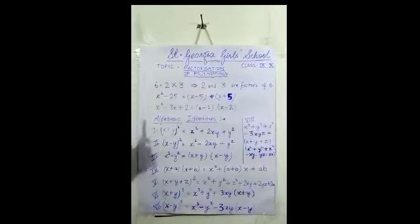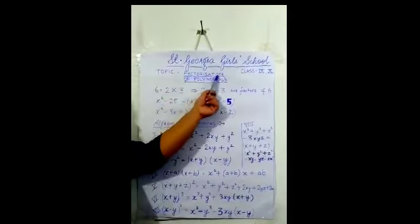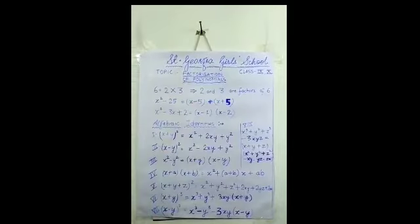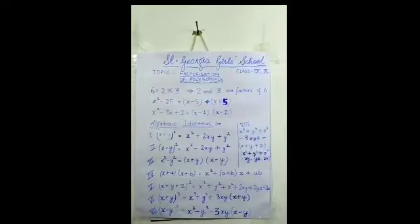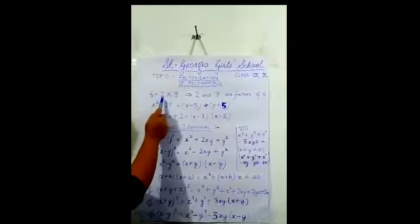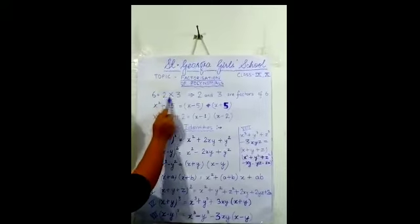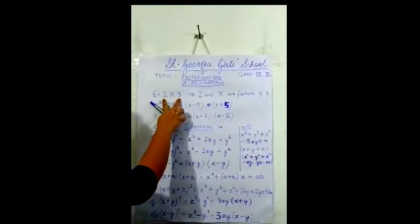Okay students, we were going through the chapter of polynomials. The topic that we will be covering today is factorization of polynomials. You all have learned about factor theorem and what factors are. Suppose 6 is a number — how can you factorize 6? It can be written as 2 into 3, so what are 2 and 3? They are the factors of 6.